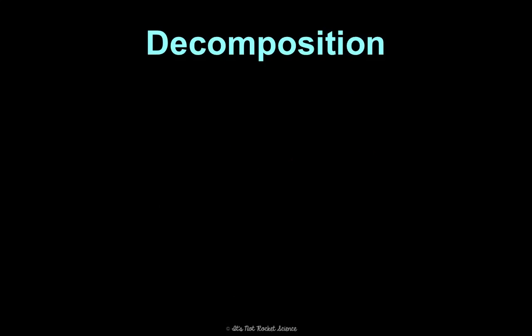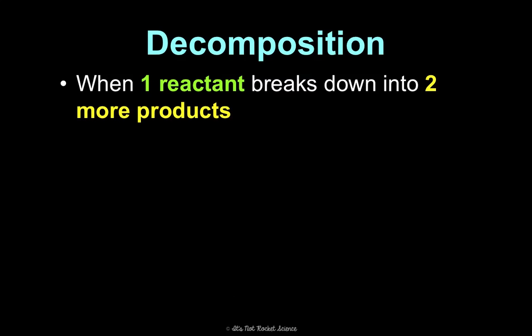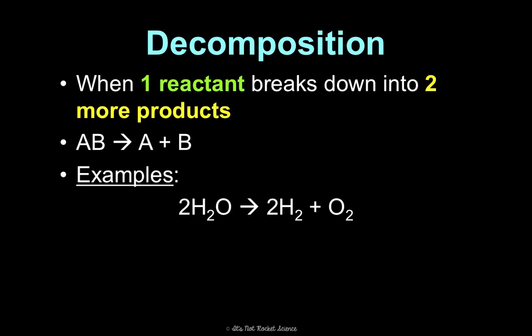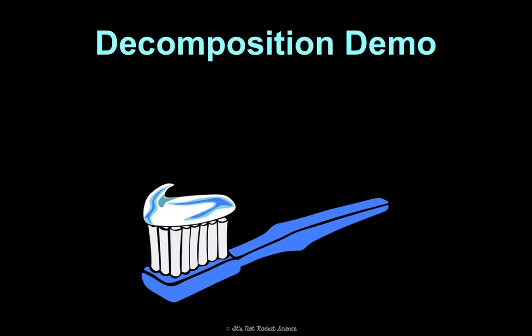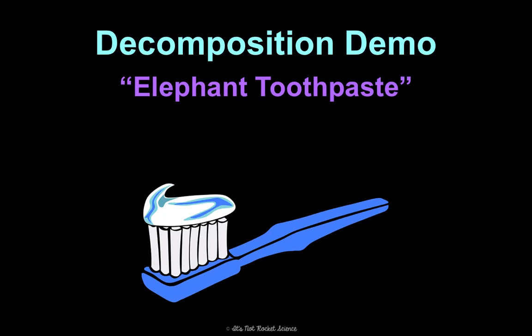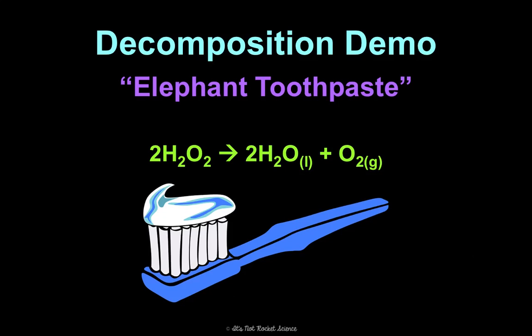The next type is decomposition. This is when one reactant breaks down into two or more products — just the opposite of synthesis. One compound breaking down into two elements. Examples include water breaking down into hydrogen gas and oxygen gas, or H2CO3 breaking down into water and carbon dioxide. We will do this in class — it's called elephant toothpaste. We're going to take hydrogen peroxide and it will decompose into water and oxygen gas.